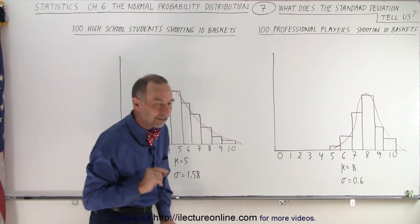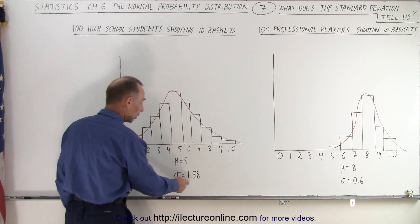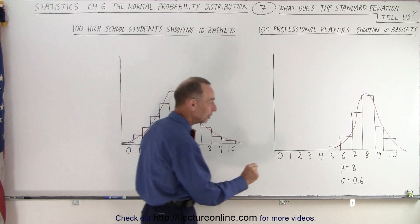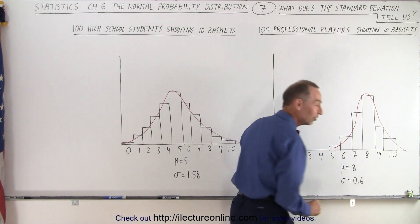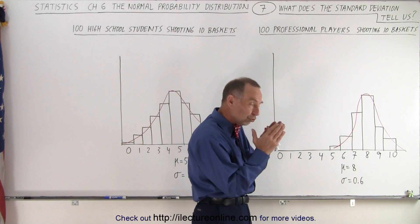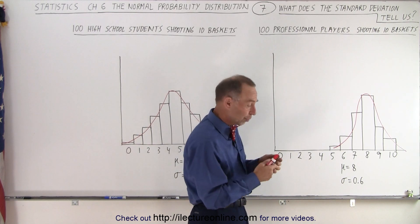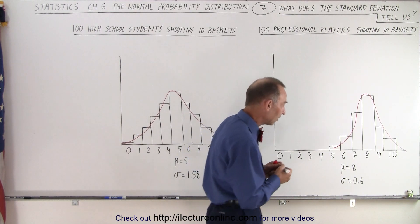Notice the standard deviation difference. Here, as we had calculated before, the standard deviation was 1.58. Here the standard deviation is 0.6. That means that we have a much narrower range in which the majority of players will make baskets.